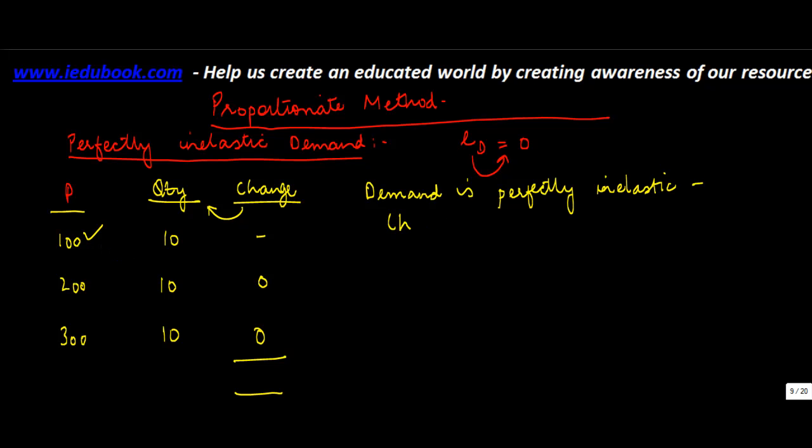Change in price does not affect quantity. So because we are using the proportionate method, what's the proportionate change in quantity? The change in quantity is zero vis-à-vis price.